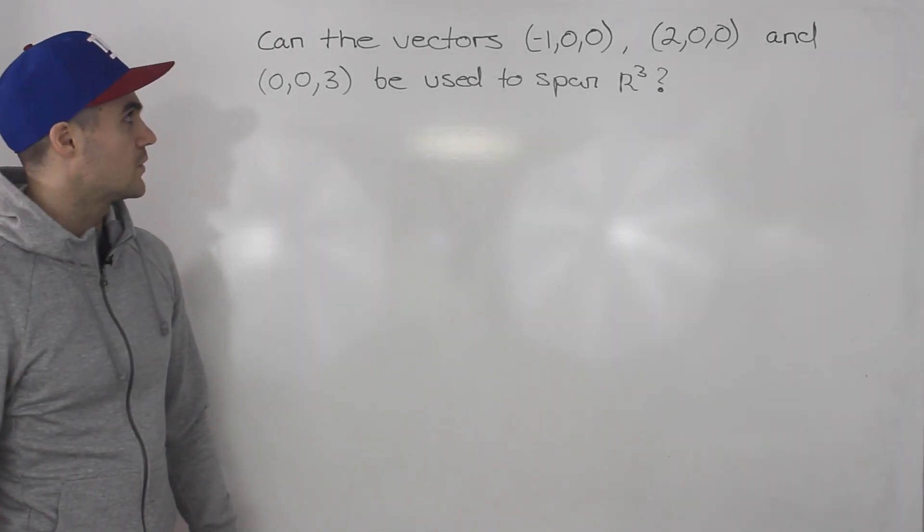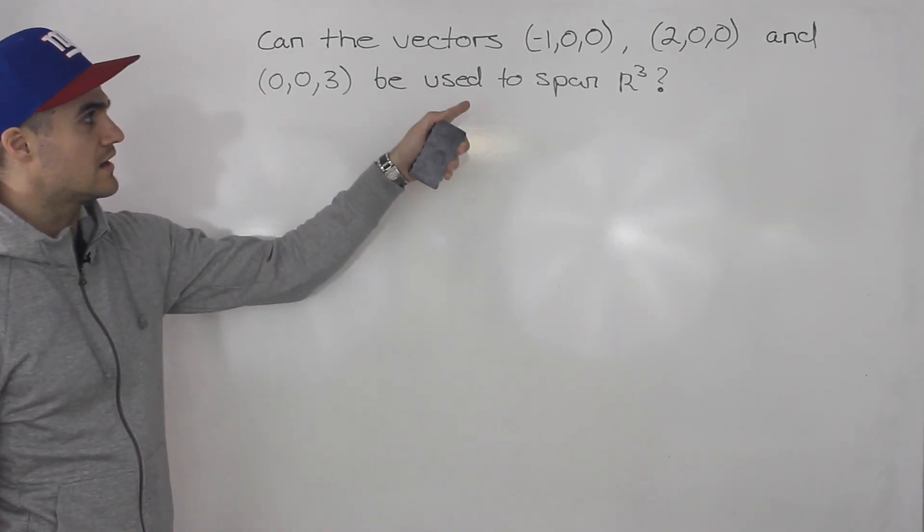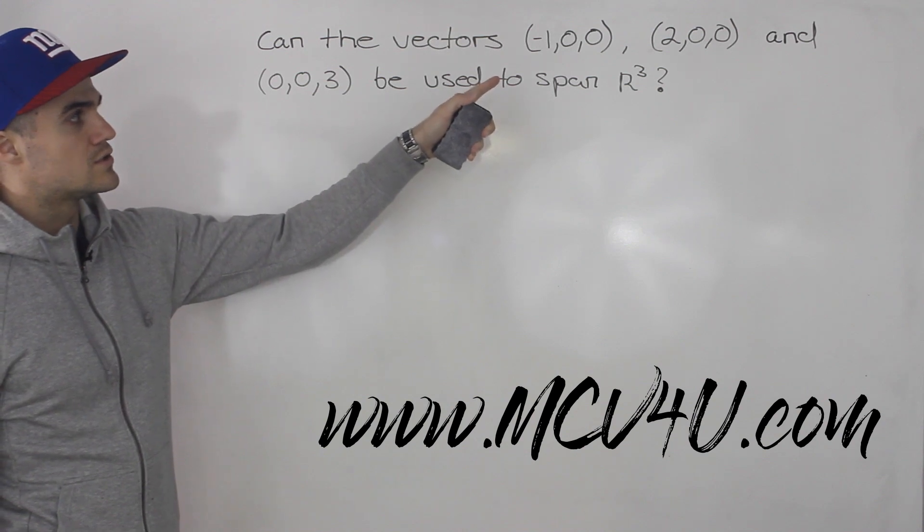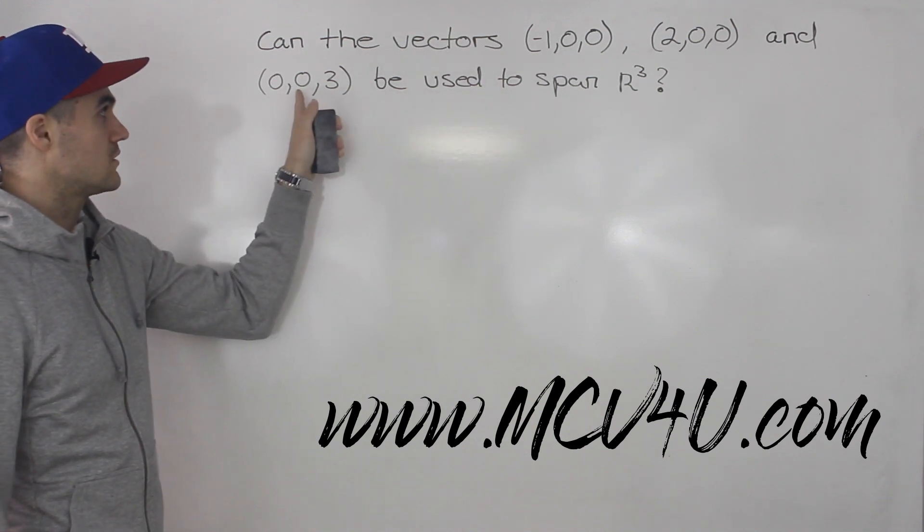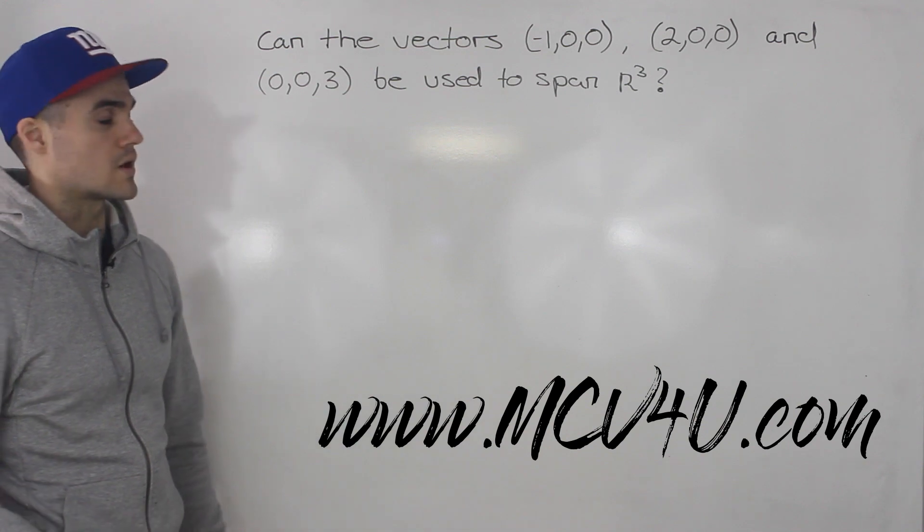Welcome back everybody, moving on to another question. Can the vectors (-1,0,0), (2,0,0), and (0,0,3) be used to span R³?